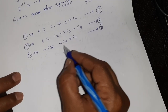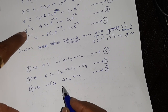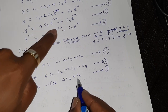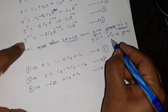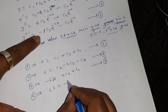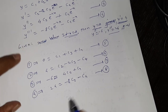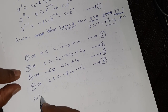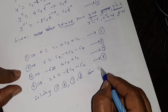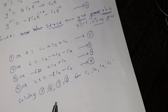Substituting y''=-6 and x=0 gives 4·c3 + c4 = -6 (equation 7). Then substituting y'''=24 into equation 4 with x=0 gives 24 = -8·c3 - c4. This is equation 8. So now we solve equations 5, 6, 7, 8 to find the values of c1, c2, c3, c4.